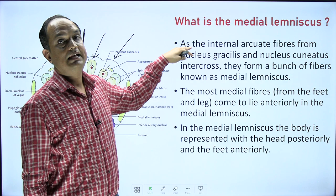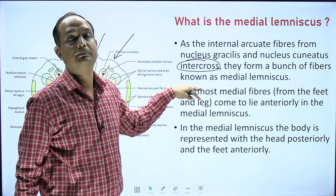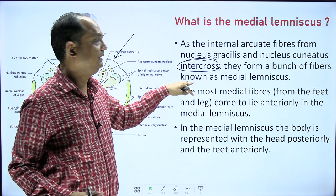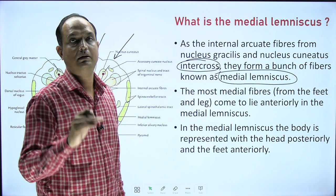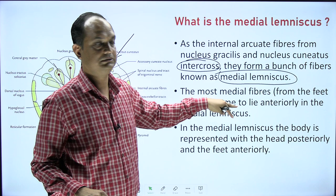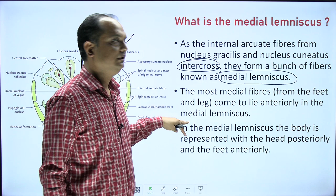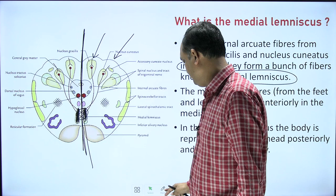As the internal arcuate fibers from nucleus gracilis and cuneatus intercross and move to the opposite side, they form a bundle of nerve fibers — the second order neurons. This bundle is known as the medial lemniscus. There are four lemnisci in different parts of the brain stem; right now we are discussing the medial lemniscus. The most medial fibers from the feet and leg come anteriorly in the medial lemniscus. The arrangement is: head lies posteriorly and foot lies anteriorly.